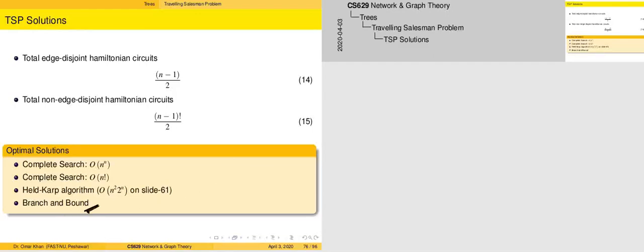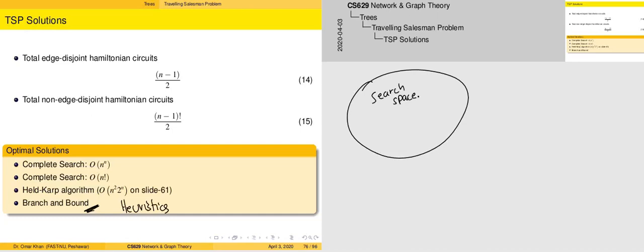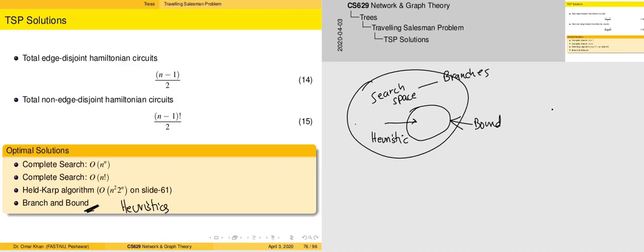Next, we are going to look at the branch and bound based approach. This approach uses heuristics. The basic idea is that since we are looking at a search space which represents a kind of tree, we can identify a sub-portion of this space. The search space consists of many branches, and we want to bound the solution space. We will eliminate certain branches based on this heuristic.